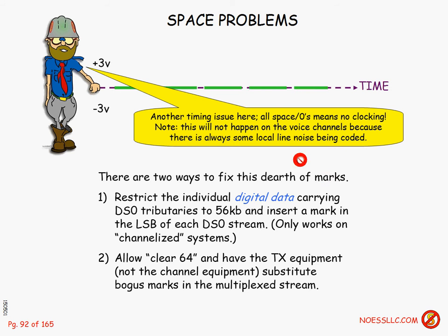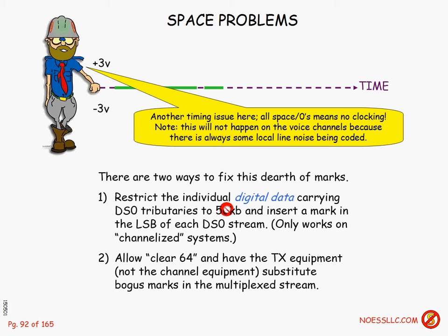There are two ways to fix this problem of long strings of zeros. The first is to restrict individual digital data-carrying DS0 tributaries to 56 kilobits, not 64. Because the time slot is a 64K channel, the easiest way to prevent long zero strings is simply don't let them send the full 64K. The way you do that is to insert a mark in the least significant bit of each individual DS0 or 64-kilobit stream. But this only works on channelized systems.